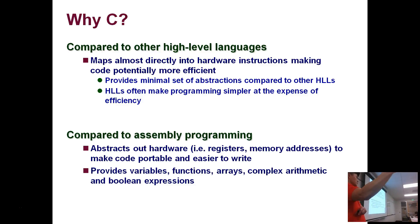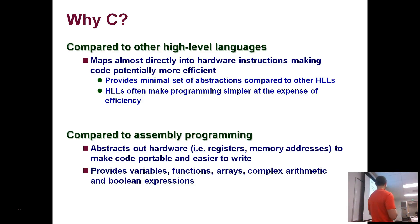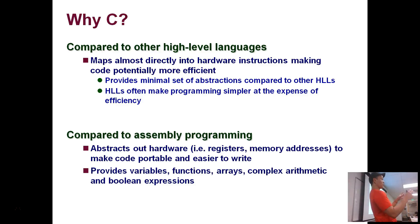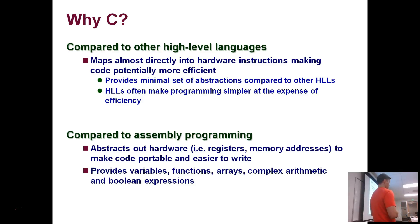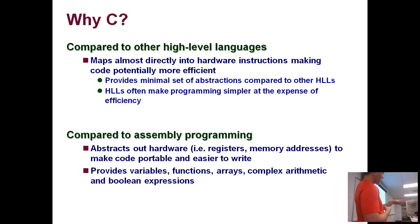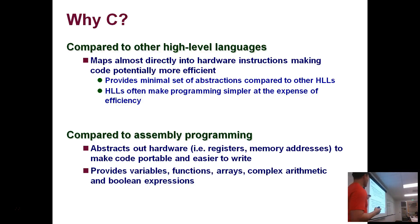High-level languages often make programming simpler at the expense of efficiency. For example, people love JavaScript, but the JavaScript runtime is like 20 megabytes — a different programming language without those features can give you a much smaller runtime. Compared to assembly programming, there won't be a lot of assembly here — there'll be a small assembly assignment — but C gives you just enough abstractions so you're not painfully working with hardware registers and hardware instructions.